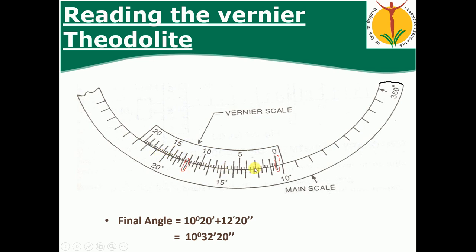On the vernier, we look for which vernier line exactly coincides with a main scale line. The vernier reads from 0 to 20 minutes, matching the least count of the main scale. For example, if the coinciding line reads 12 minutes 20 seconds, then the total final angle will be 10 degrees 32 minutes 20 seconds. This is how we read the angle using a theodolite.